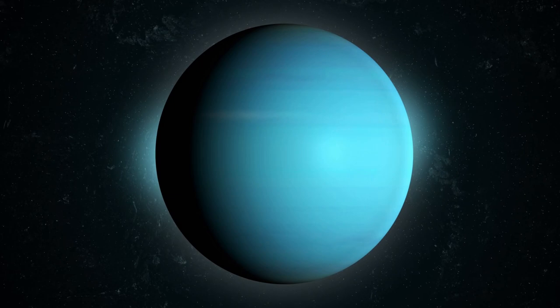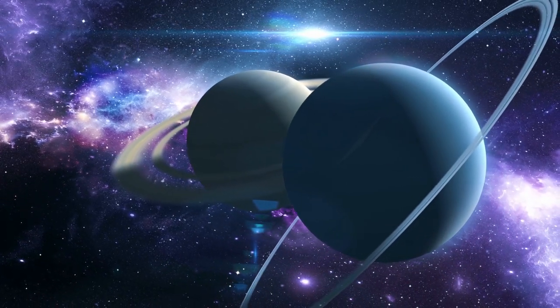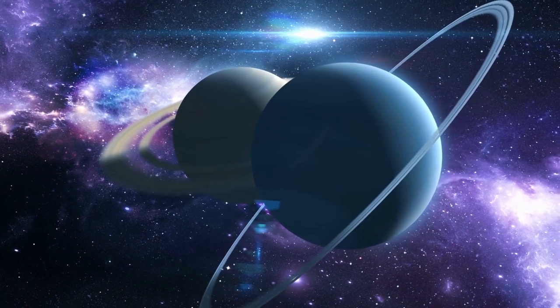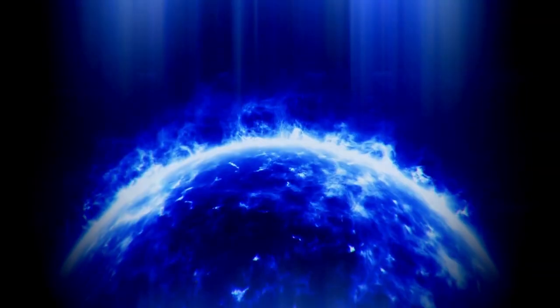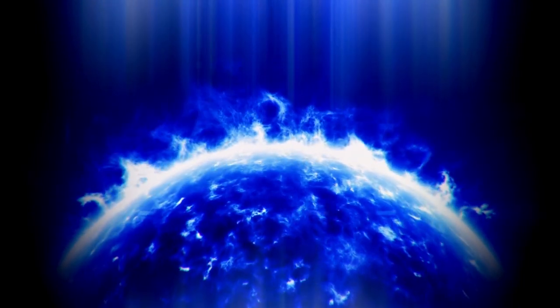Uranus gets its blue-green color from methane gas in the atmosphere. Sunlight passes through the atmosphere and is reflected back out by Uranus's cloud tops. Methane gas absorbs the red portion of the light, resulting in a blue-green color.